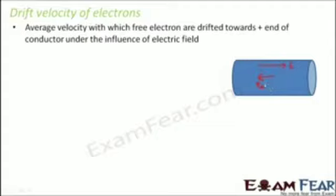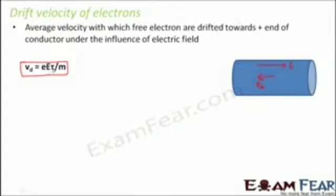The direction of drift velocity of an electron is always opposite to the direction of the applied electric field. The drift velocity of electrons is given by eEτ/m, where e is the charge on an electron and capital E is the applied electric field.